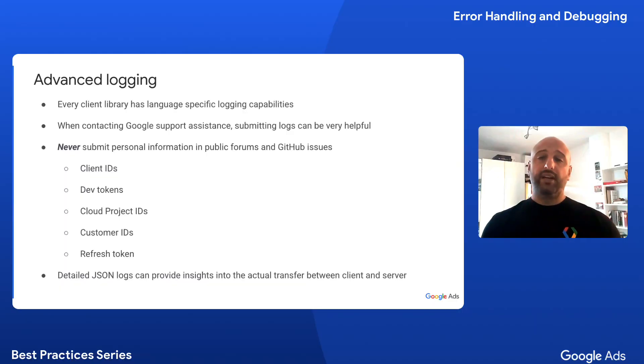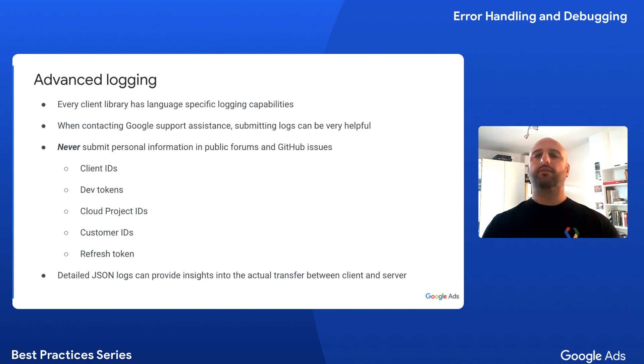Generally, the Google Ads API provides meaningful error messages in the responses that help you diagnose what has gone wrong with your requests. But what if you need some more detailed information about the data being exchanged between your application and the Google Ads API? This is where logging comes to the rescue to help debug what is going on when something goes wrong. By default, every client library is configured to provide basic request and response logging, but there may be some cases where you need more details, such as the full request and response bodies being exchanged.